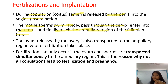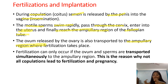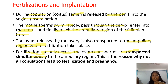The motile sperm will go through the cervix and enter the uterus. After entering the uterus, it will finally reach the ampullary region of the fallopian tube. The release of the ovum is also transported to the ampullary region where fertilization takes place. Remember this sequence — fertilization occurs in the ampullary region. The ovum and sperm are transported simultaneously to the ampullary region.